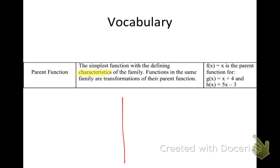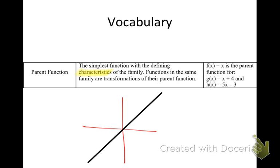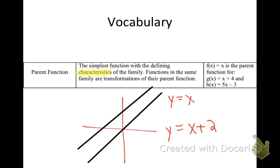We all know the equation Y=X. Does everybody agree that black line is Y=X? What if I gave you the equation Y=X+2? Well, it's the same line — the difference is my graph has shifted up 2 units. That's what we're going to talk about today: how these graphs should look and where they should be.